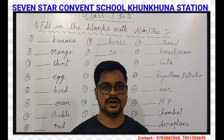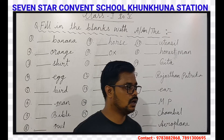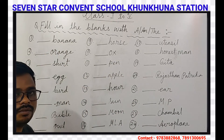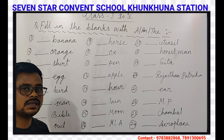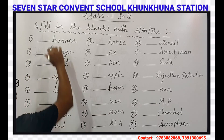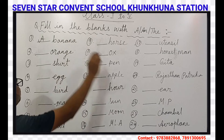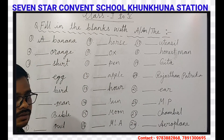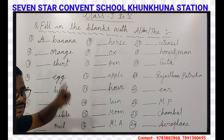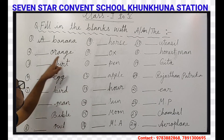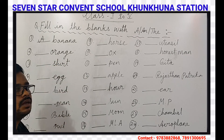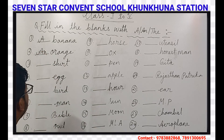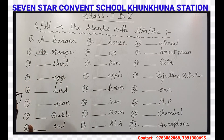Let's get the exercise started. Our first question is banana. The first letter of banana is B, and B is a consonant, so A will come here. Our next question is orange. The first letter is O, and O is a vowel, so AN will come here.